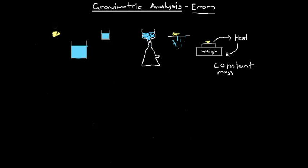Now that we understand the process involved with gravimetric analysis, it can be really useful to look at possible errors that can occur. By understanding the errors and the effect they have on our calculations, we can get a deeper understanding of what's going on. When analysing the effect of an error, we want to compare the calculated percentage by mass — which is affected by errors and obtained experimentally — to see if it is higher or lower than the actual percentage by mass.